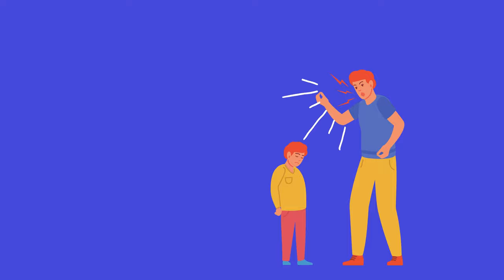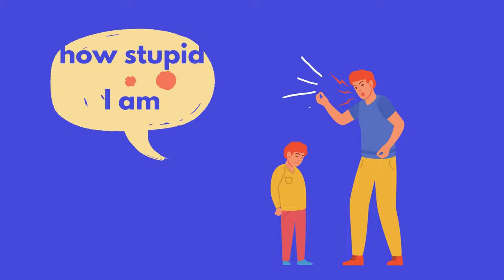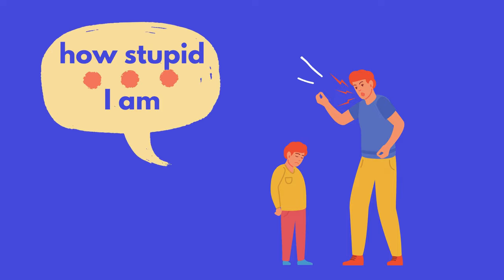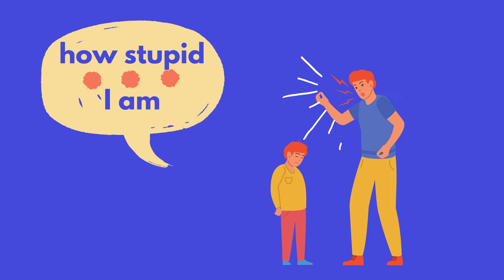For example, if our parents always criticized us for not doing something correctly, the self-schema I am stupid may slowly form. As you have more and more similar experiences, the way you think about yourself becomes harder to change. If new information doesn't fit with the way you think about yourself, you might not even realize it or you might forget it really quickly. You might also try to change or ignore the new information instead of changing the way you think about yourself.